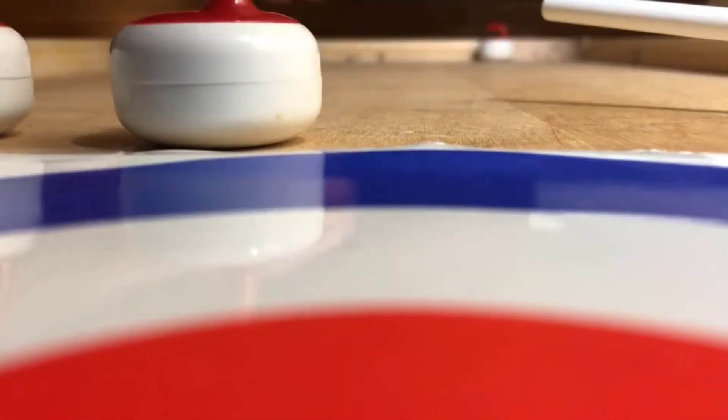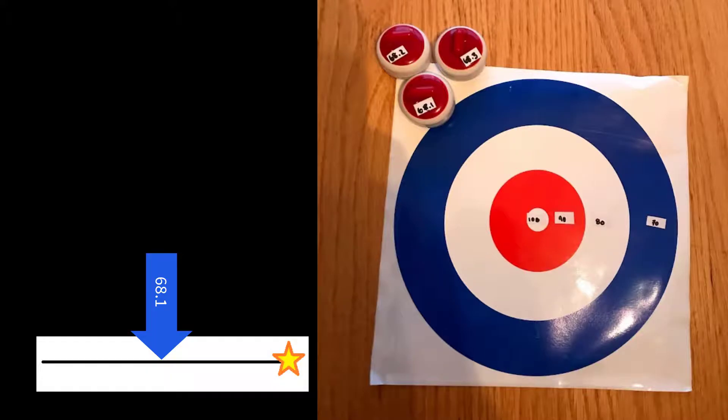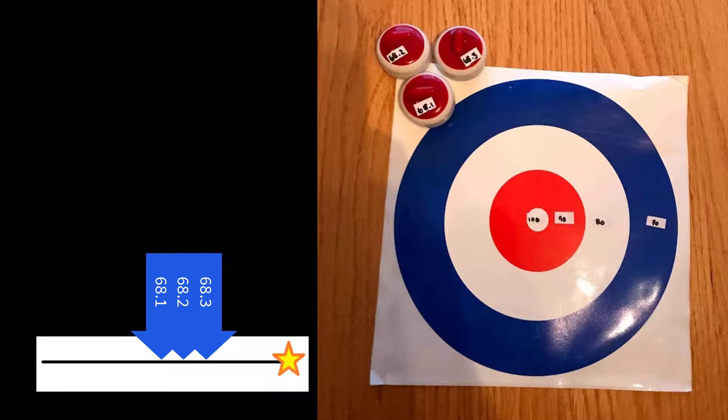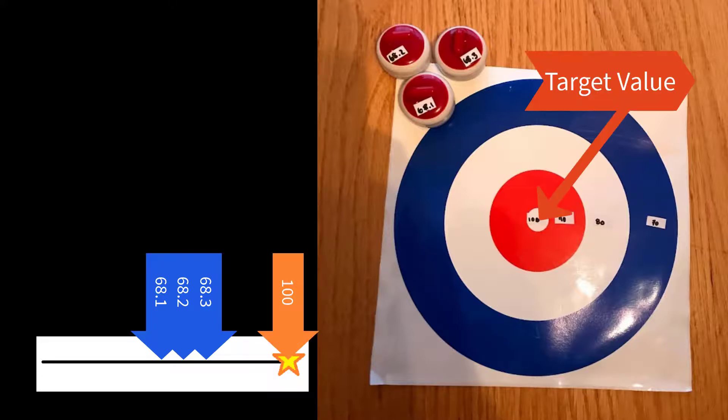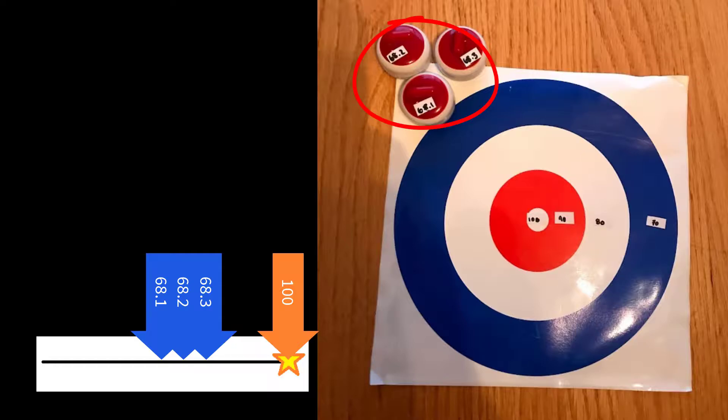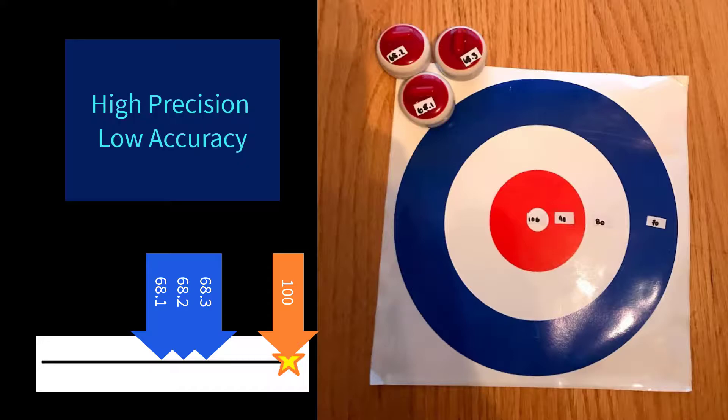Next, let's add some values. Suppose that our target value is 100. We measure our values to be 68.1, 68.2, and 68.3. None of these measurements are near to the target value, so this configuration is not accurate. These measurements are near to one another. We can say that this configuration has high precision but low accuracy.